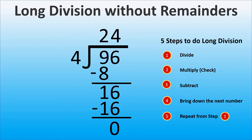16 minus 16 is 0. As there are no more numbers to bring down and the result of the subtraction is 0, it means that we don't have a remainder, and we finished the division. So 96 divided by 4 is 24.